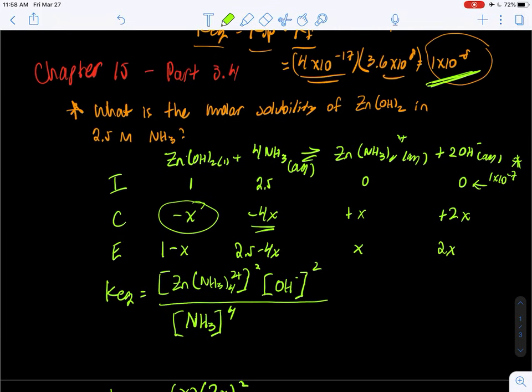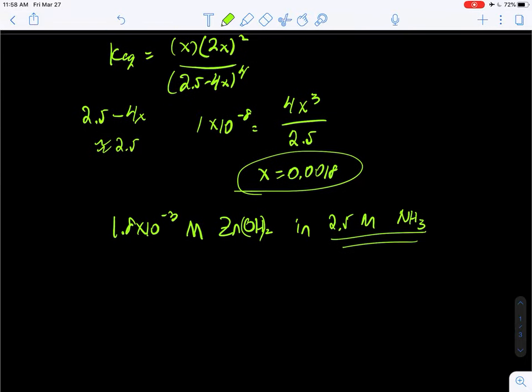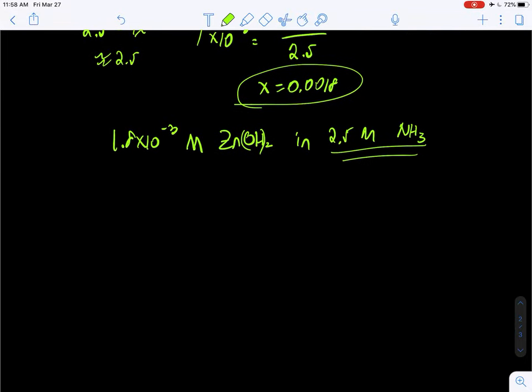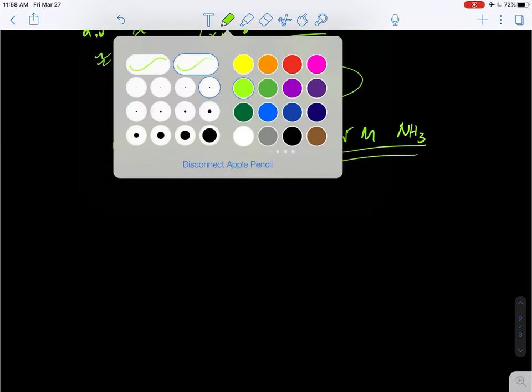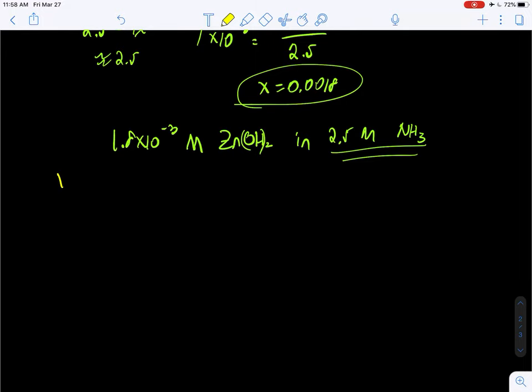Coming back to Le Chatelier's principle, you know that if you increase the concentration of ammonia this reaction is going to shift right and you're going to make more ions, dissolving more of the solid. The molar solubility should be greater in higher concentrations of ammonia. That's a little bit about how you do this problem. Let me give you another problem - this is your 'you try it' guy.